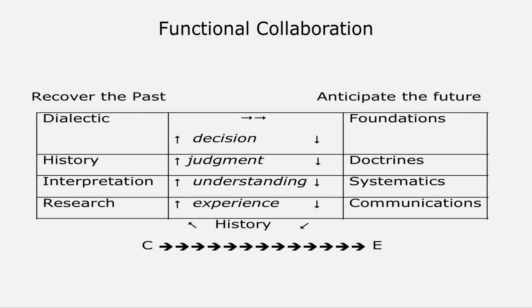I put some arrows there, so you see this is a feedback system. It loops around and it's a whole process. We'll get to the line at the bottom, but for the time being, let me just say that that's just the process of history. I want to make one point now which will become clear as we move along: functional specialization, while it's part of history, is in some sense a higher control for history. That's certainly how Lonergan meant it.